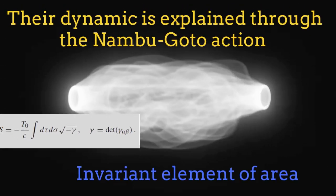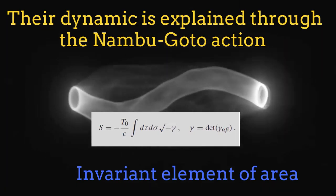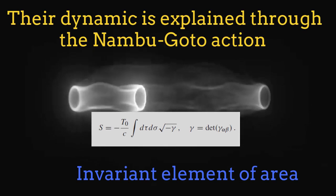The dynamics of strings is explained through the Nambu-Goto action, which is nothing else than an invariant element of area described by the string during its motion.